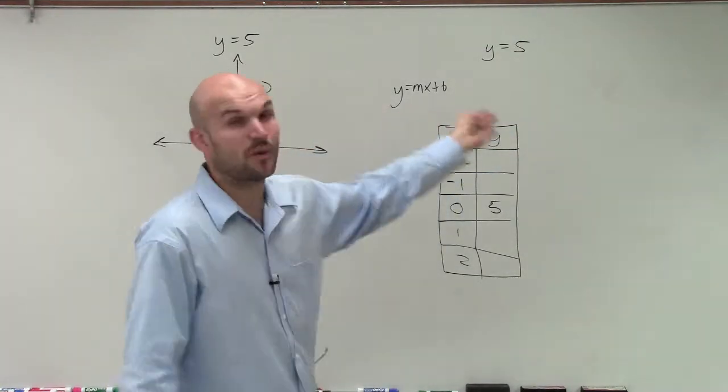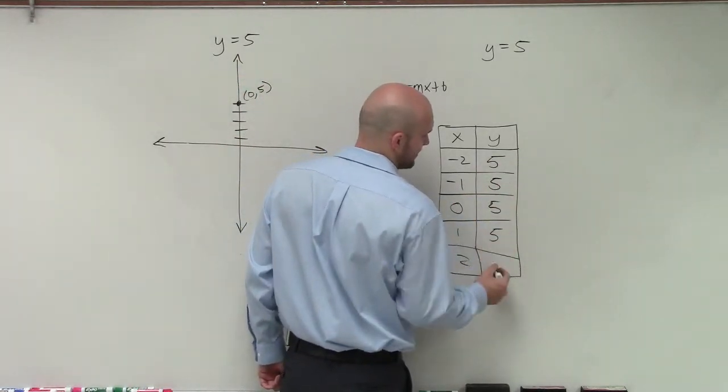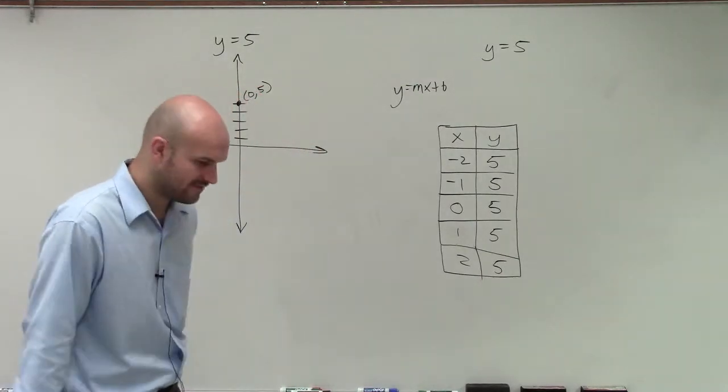in our equation, there's nowhere for us to plug them in for our value of x. There's nothing. It's just y equals 5. So what that tells us is y always just equals 5. It doesn't matter what the value of x is, y is just always going to equal 5.